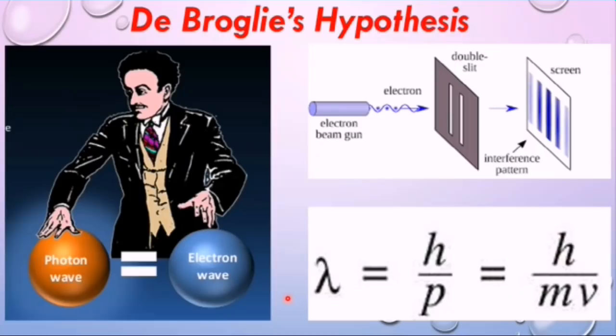After that, I will discuss de Broglie's hypothesis. I will describe and interpret qualitatively the evidence provided by electron diffraction for the wave nature of particles and the relationship for the de Broglie wavelength, lambda equal to h over p, where lambda is the wavelength associated with material particles, h is Planck's constant and p is the momentum of the particle which is a product of mass and velocity.